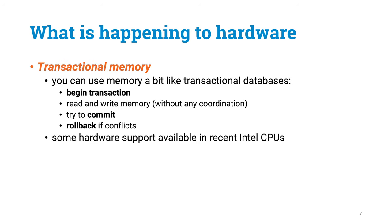Another thing that is possibly coming to our hardware is so-called transactional memory. This is something that would change the way in which you can write your parallel programs. Instead of using, for example, critical sections to prevent many threads from accessing the same element simultaneously, you could use memory a bit like a transactional database. You could begin a transaction, read and write memory without any coordination, and then try to commit the changes. The system would keep track of what different threads are doing, and it would let the transaction commit if there are no conflicts. And otherwise you would roll back and try again. There is already some hardware support for such a model of programming in recent CPUs. It will be interesting to see how successful this is going to be in the long run.